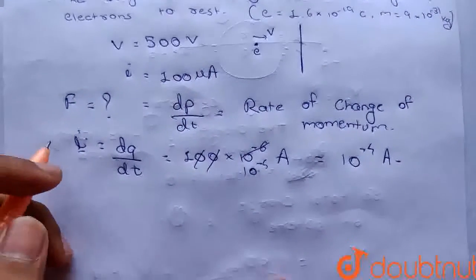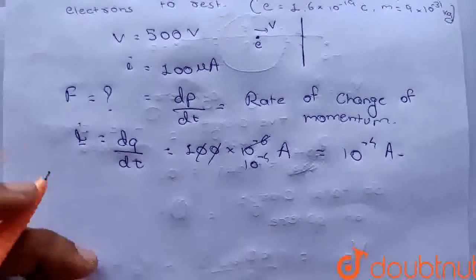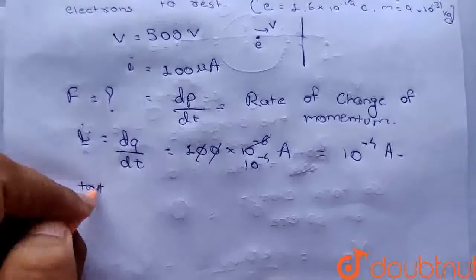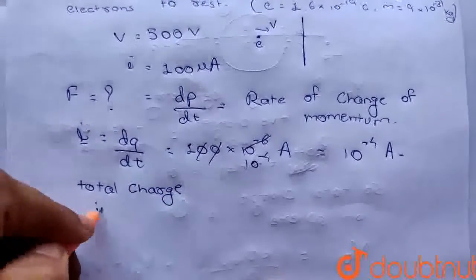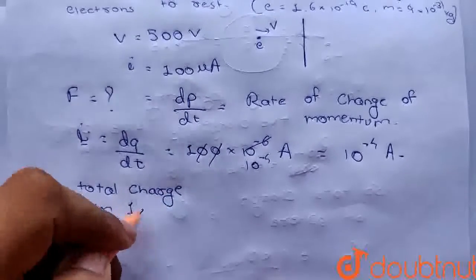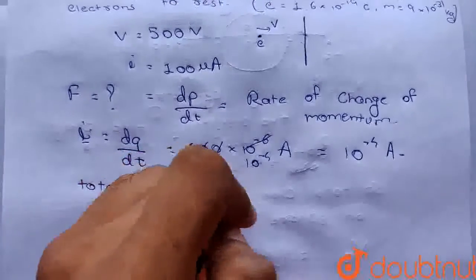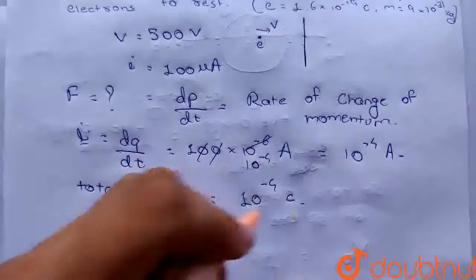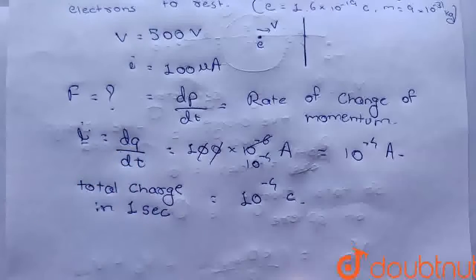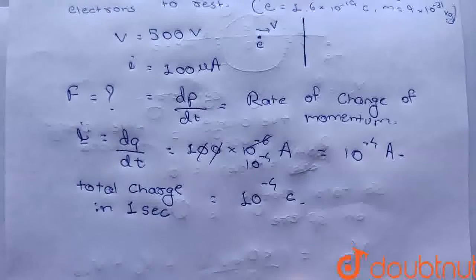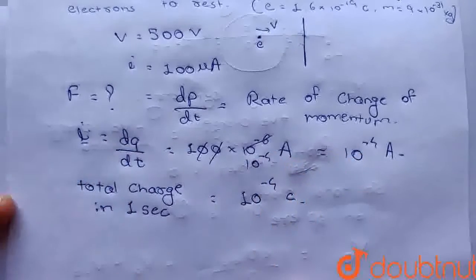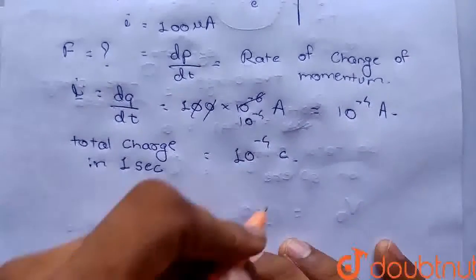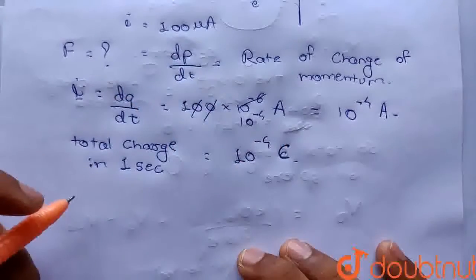तो एक second में total charge कितना flow होगा? In one second, total charge होगा 10 raise to minus 4 coulombs। क्योंकि dq/dt चार्ज के flow होने की rate है, तो अगर एक second में dq charge जाएगा तो dq की value है 10 raise to power minus 4 coulombs।